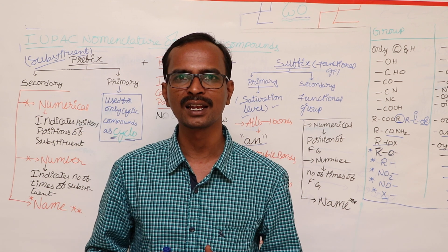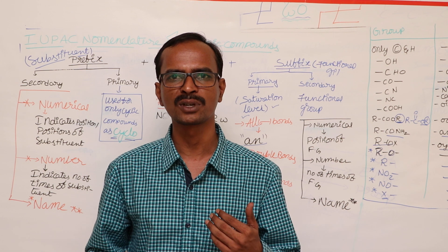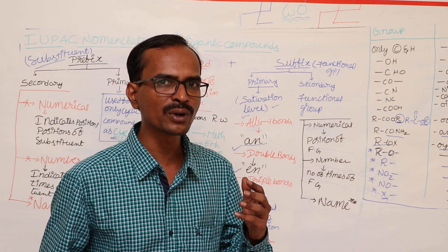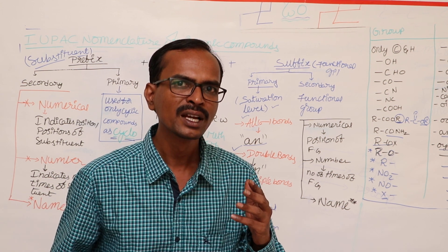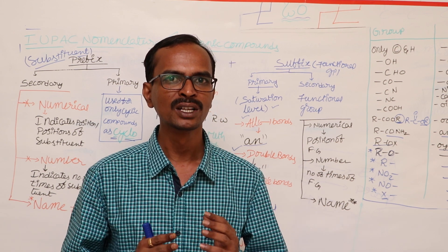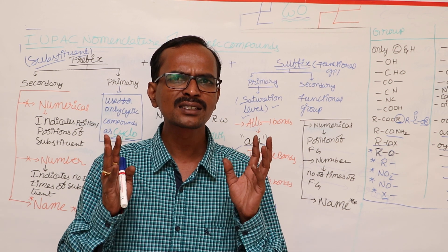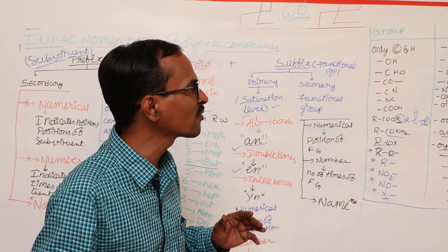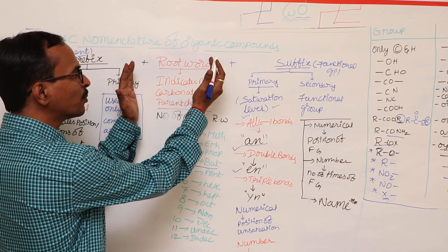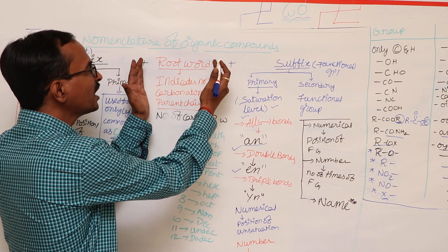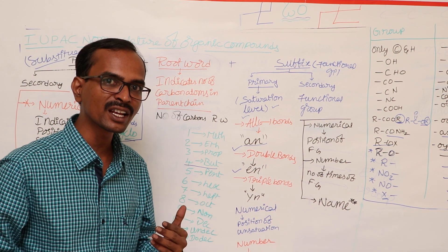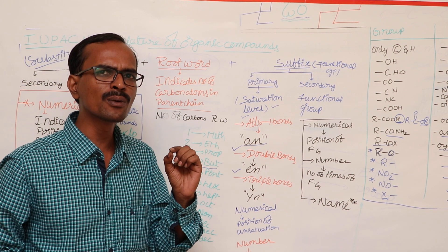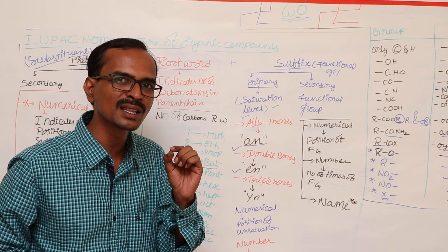Without making any delay, let us start today's concept: IUPAC nomenclature of aliphatic compounds. If we want to write the IUPAC name of an organic compound, it has a certain basic skeletal system. In the skeletal structure of the IUPAC name, the important thing is the root word. The root word gives the information about the number of carbon atoms in the parent chain.